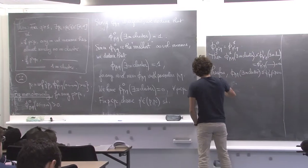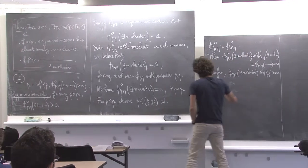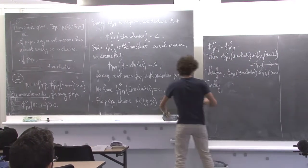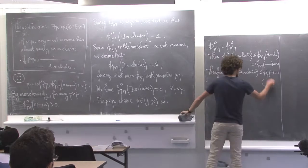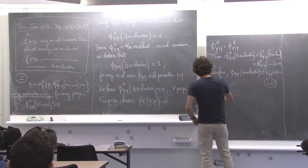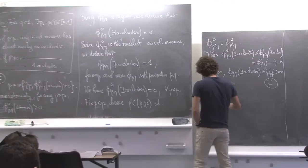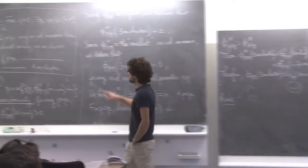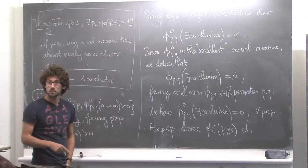There is just a last thing. And just a remark: when this infinite cluster exists, it's unique. So you can prove that when the infinite cluster exists for phi_0 or phi_1, it is unique.